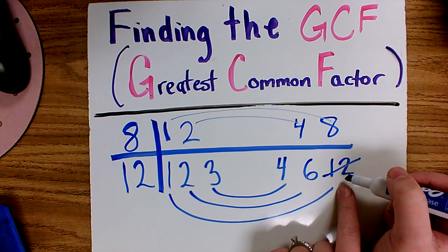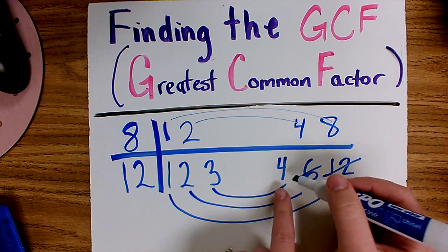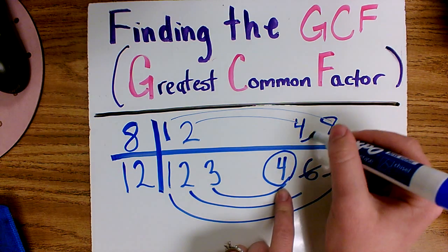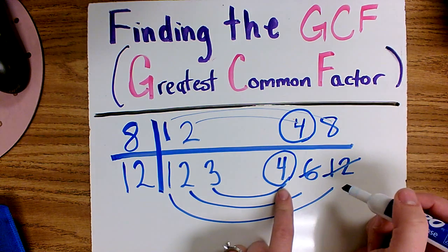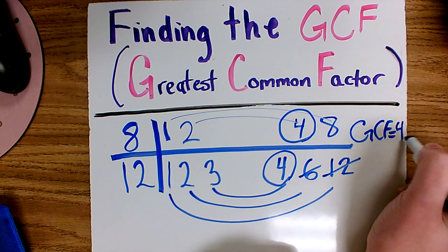So there's no 12 on top, I cross it off. There's no 6 on top, I cross it off. There is a 4, and that's the biggest number that they share. So my GCF equals 4.